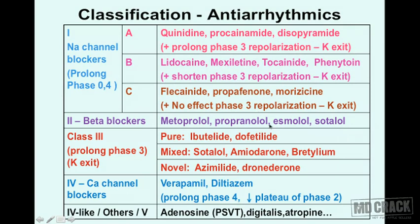Class 3 drugs act on phase 3 — the outward potassium current — and inhibit potassium exit, so this repolarization phase happens much more slowly. In other words, class 3 agents prolong phase 3, prolonging the potassium exit and thereby prolonging repolarization.